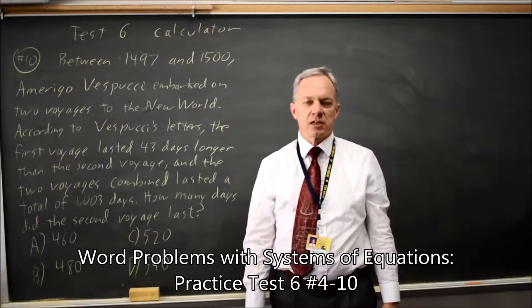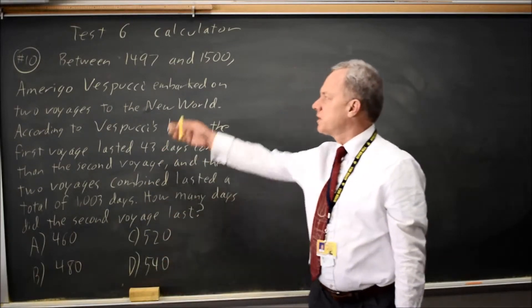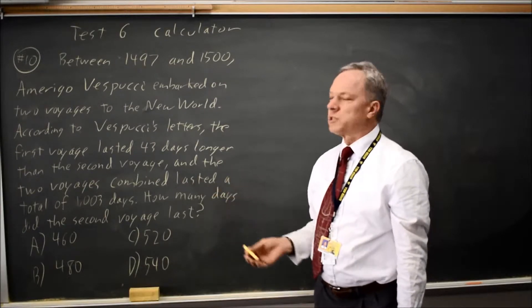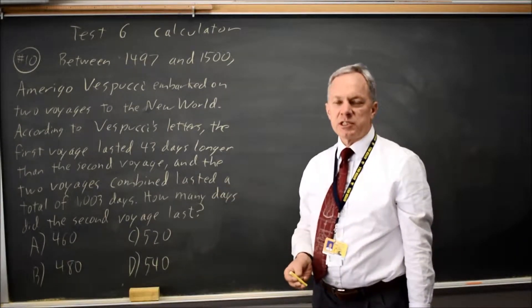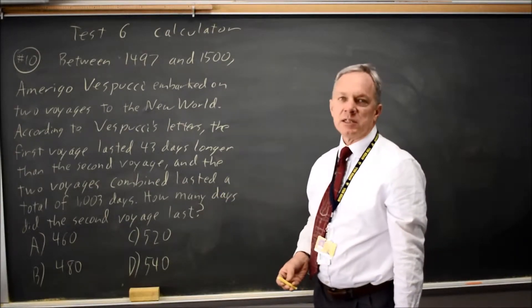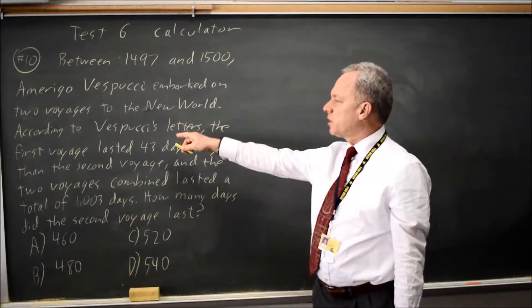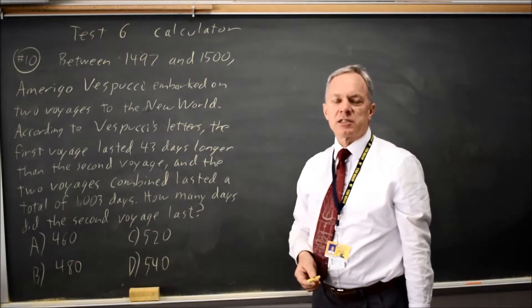This is SAT test 6 calculator question number 10. College Board presents you with a word problem which describes the length of two voyages in two different ways. When you see the same quantities described two different ways, typically that's a system of equations.